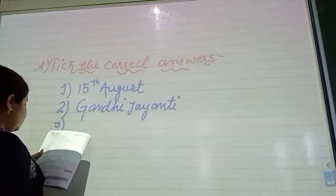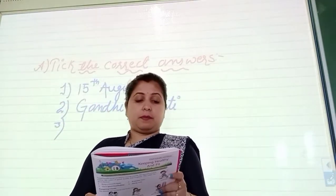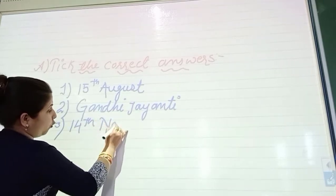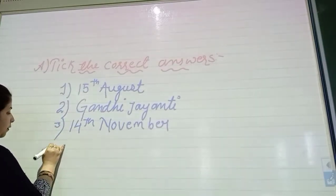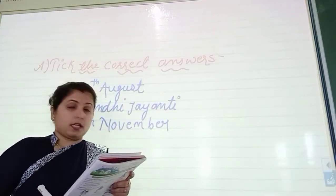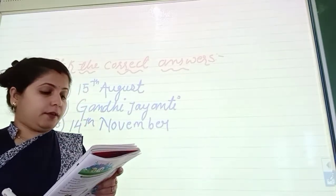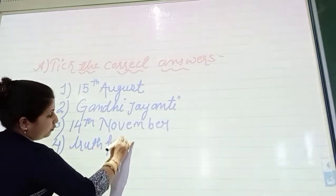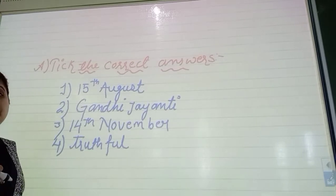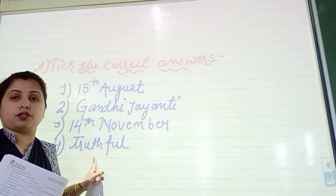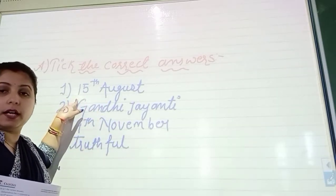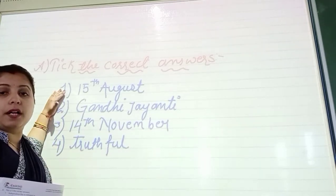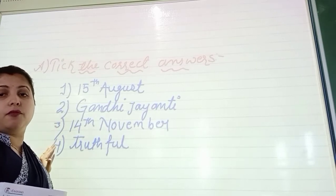Third one: Children's Day is celebrated on 14th of November every year — so the answer is 14th November. Fourth one: Gandhiji taught us to be truthful, violent, or indisciplined — truthful is correct. So to summarize: one, 15th August; two, Gandhi Jayanti; three, 14th November; and four, truthful. These are the correct answers of the exercise question — take the correct option.